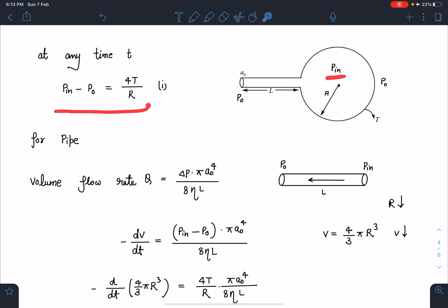Definitely this Pᵢₙ at this instant is going to be 4T/R and we are assuming that the changes in the radius are coming very slowly. For that purpose we have assumed the radius to be very very small, that means a very small volume of air is leaking.